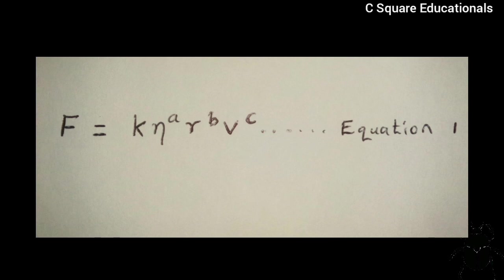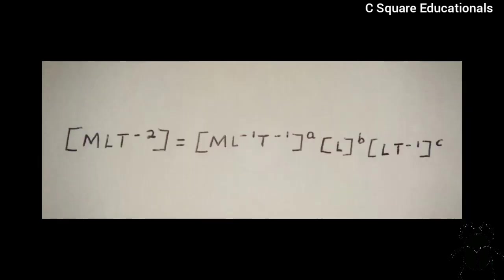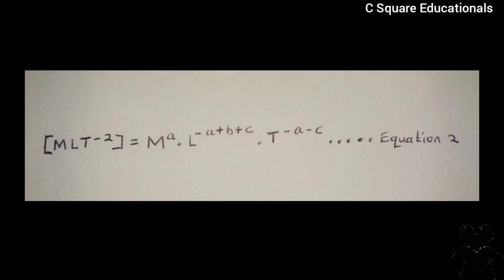Writing the dimensions of parameters on either side of the equation, we get [M L T^-2] is equivalent to [M L^-1 T^-1]^A [L]^B [L T^-1]^C. Simplifying this, we get [M L T^-2] is equivalent to M^A L^(-A+B+C) T^(-A-C). Let us call this equation 2. Now, we know that in classical mechanics, mass, length, and time are independent entities. Equating the exponents of mass, length, and time respectively from equation 2, we obtain A equivalent to 1—equation 3; -A+B+C equivalent to 1—equation 4; and -A-C equivalent to -2, or A+C equivalent to 2—equation 5.